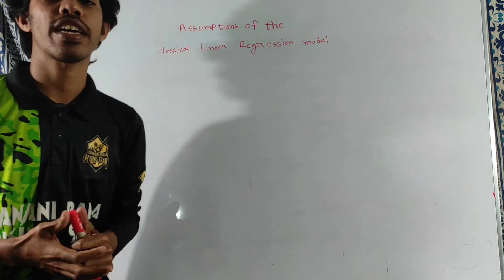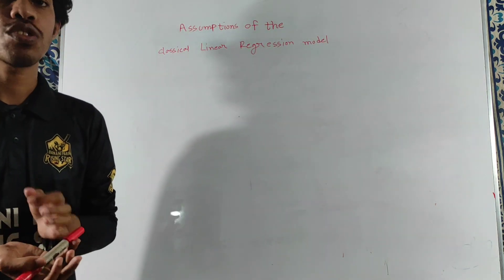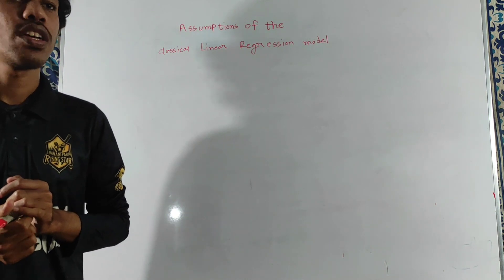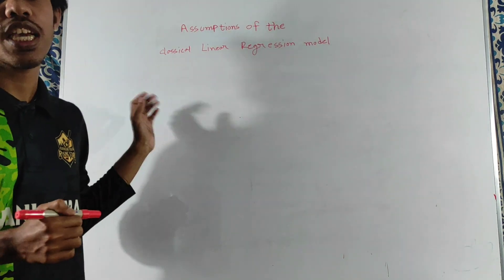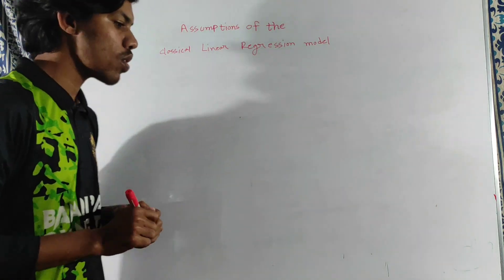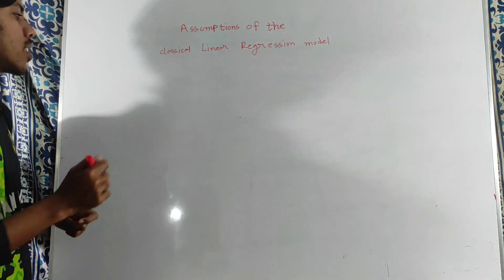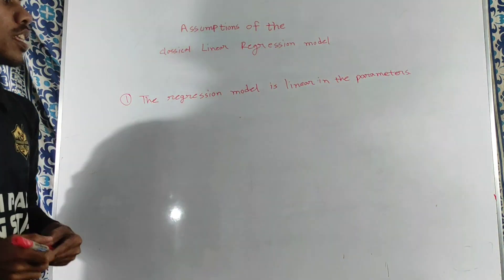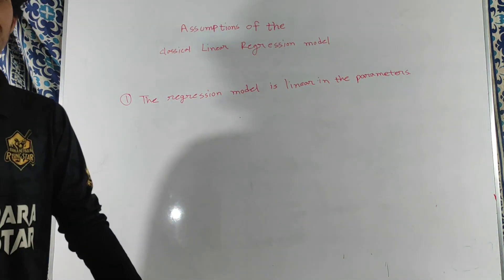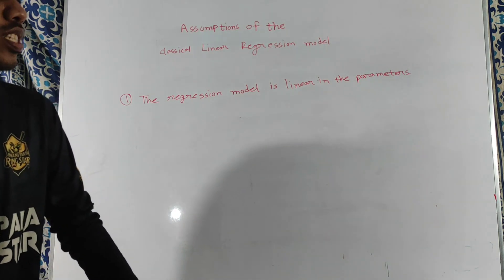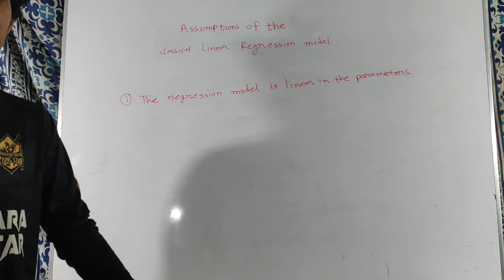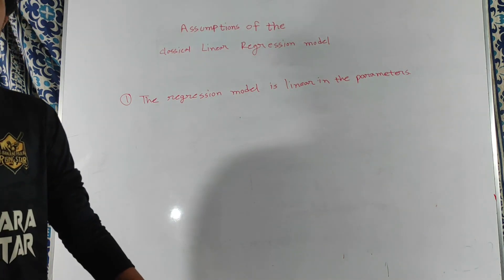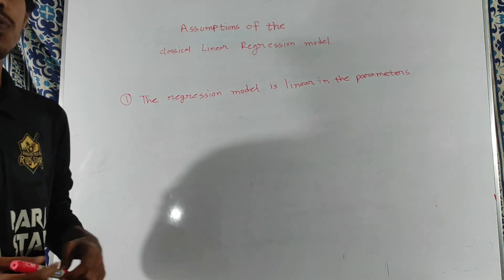The first assumption is that the regression model is linear. Linear means linear in parameters — not necessarily linear in variables. The variable may not be linear, but the parameter must be linear.